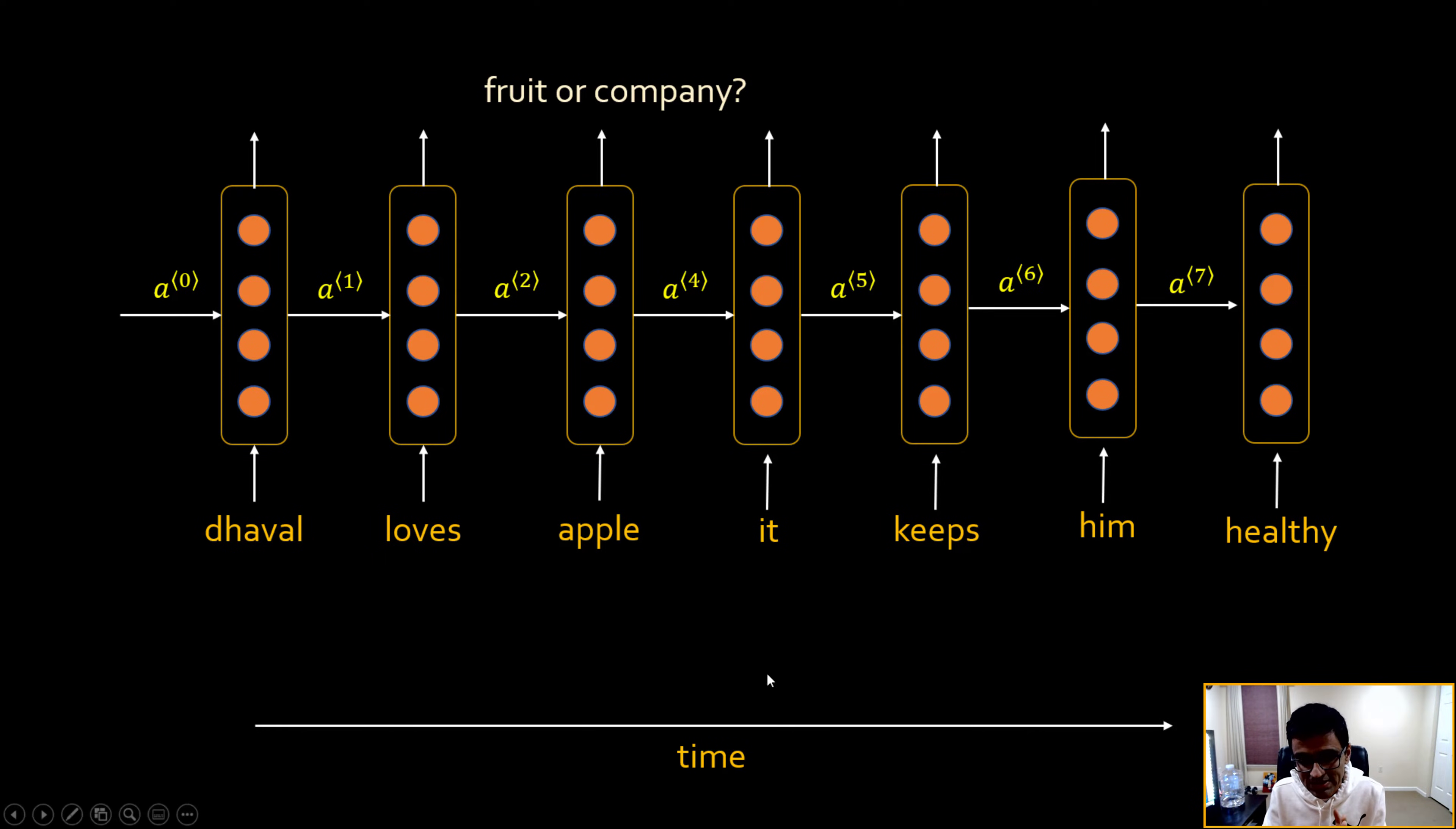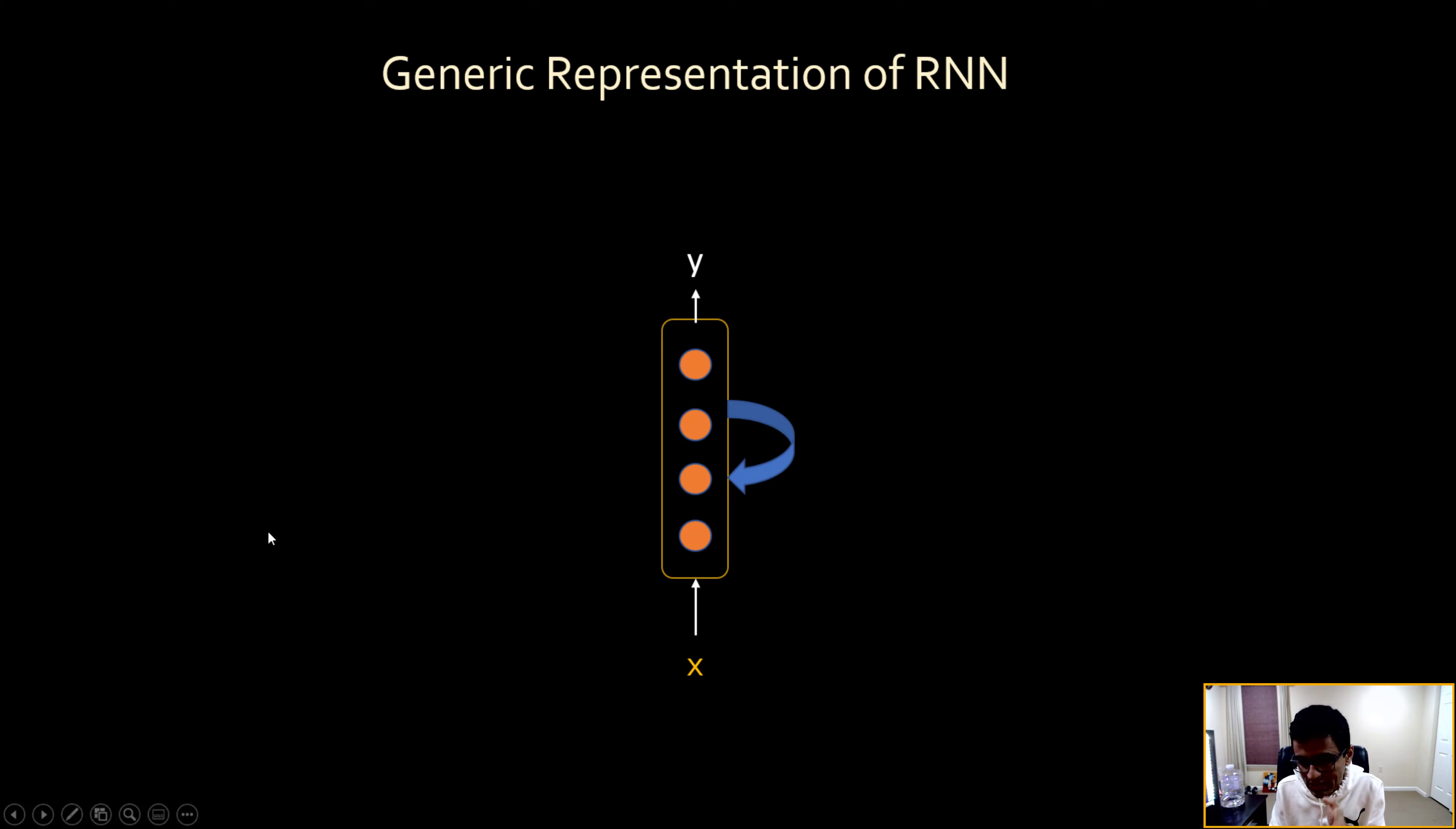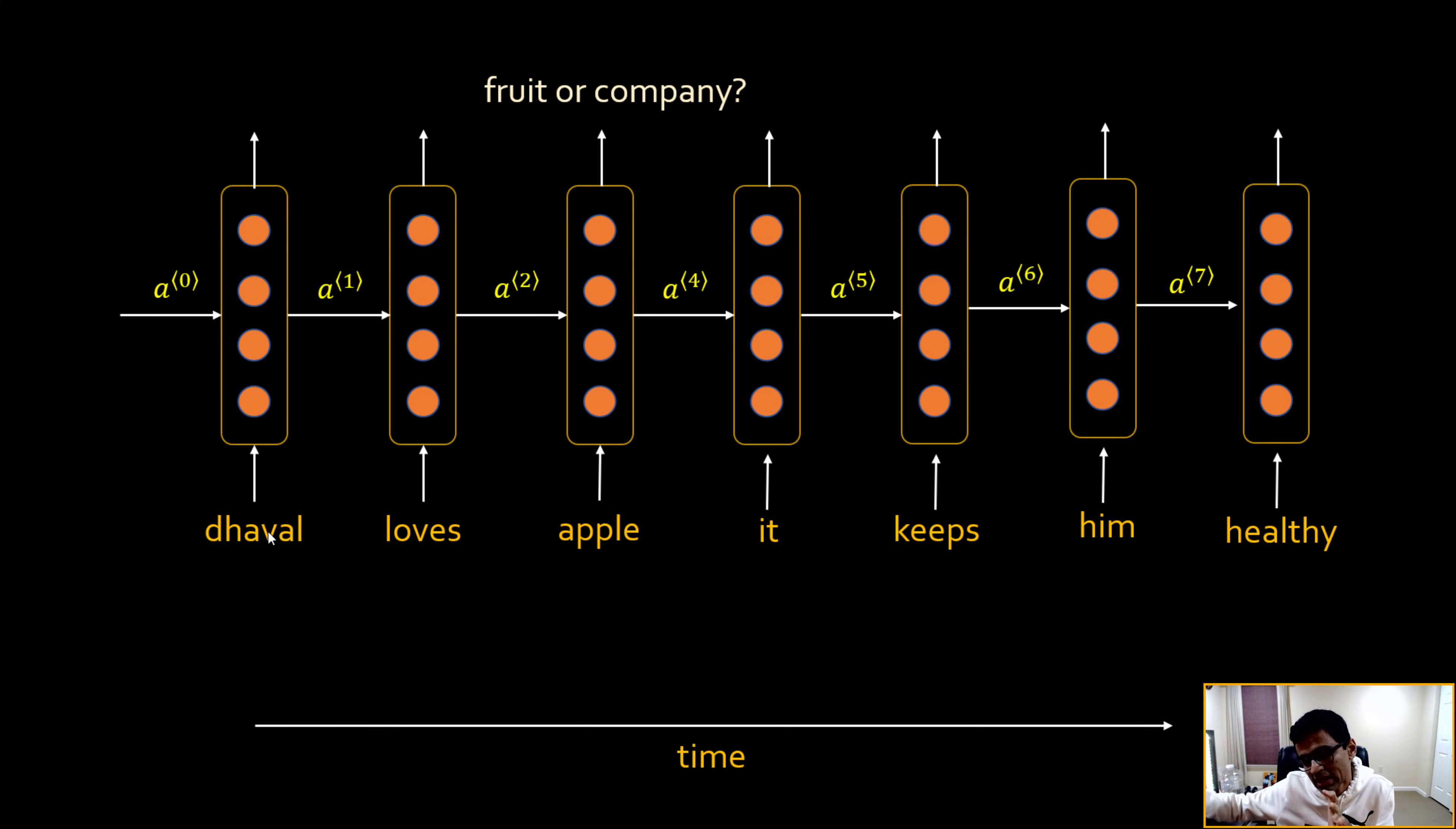So when you unroll that in time, you get a network like this. So that thing you need to keep in your mind all the time, that this is a time axis. At time t1 I am feeding word Dhaval, getting my activation a1. Then at time t2 when I feed loves, I'm actually feeding it to the same network, same layer. So the actual network is this, but since it has a looping effect, I unroll this in time and I get this picture.